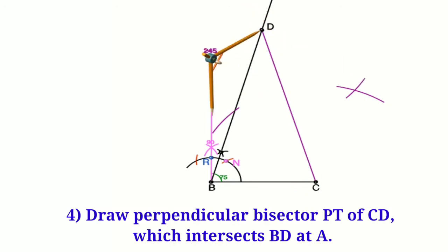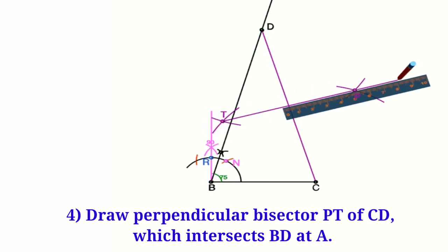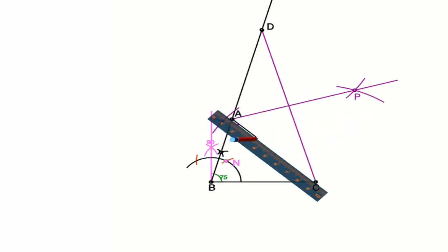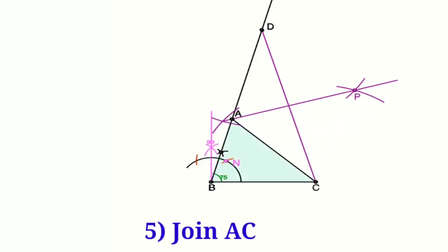If you know how to draw it, then it is good. Otherwise, you can just check the link given in the description. Now this perpendicular bisector PT intersects BD at point A, that is the third vertex of the required triangle.